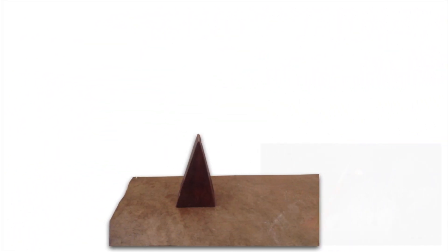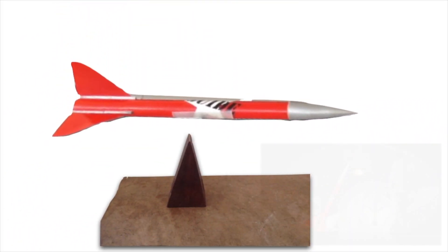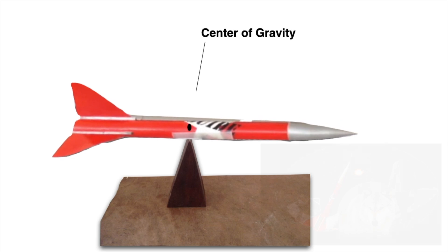The next parameter is the center of gravity or CG. The point on the rocket where the mass of the rocket is balanced. This is also the point where the rocket will rotate or pivot when subjected to aerodynamic forces. You can influence this by adding weight to the nose cone or larger fins.